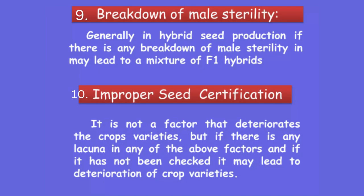The ninth factor is breakdown of male sterility. Male sterility is one of the important factors for hybrid seed production. If any seed company is going for development of hybrid seeds, a breakdown of male sterility leads to a mixture in the F1 hybrids.